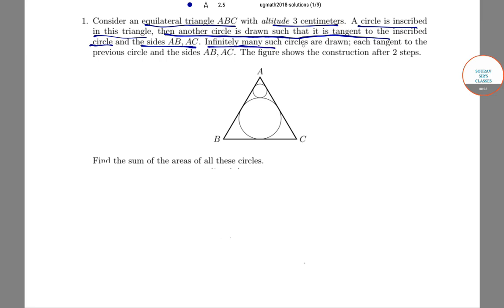Infinitely many such circles are drawn, each tangent to the previous circle and the sides AB, AC. The figure shows the construction after two steps. Find the sum of the areas of all these circles.